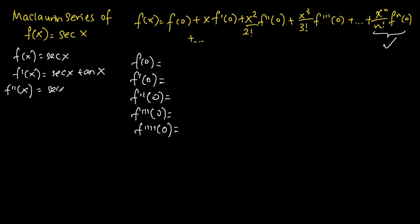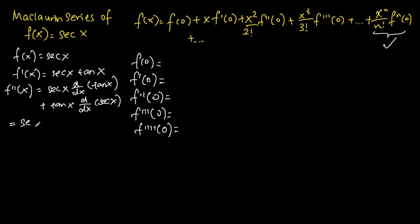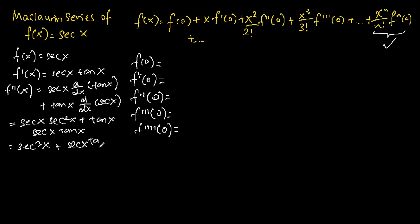What we will do is use the product rule of differentiation. We will get secant x differentiating tangent x, plus tangent x differentiating secant x. After which we evaluate it: secant x times the differentiation of tangent x is secant squared x, plus tangent x times the differentiation of secant x is secant x tangent x. So now we have secant cubed x plus secant x tangent squared x. That is f''(x).